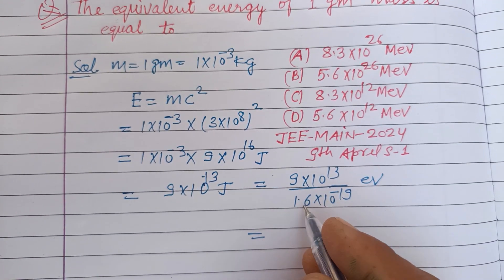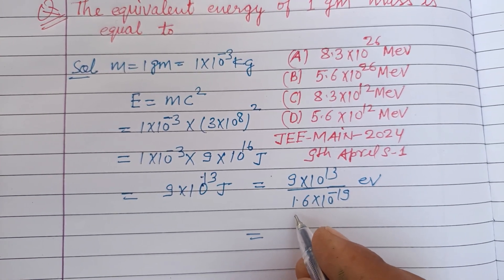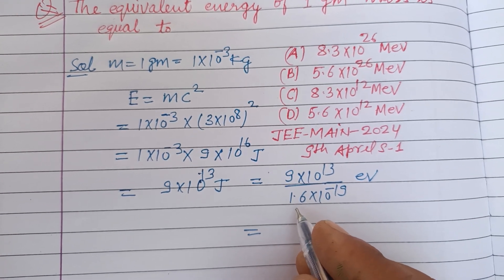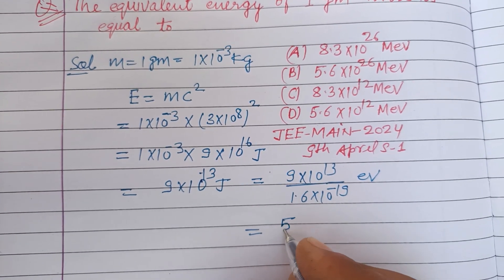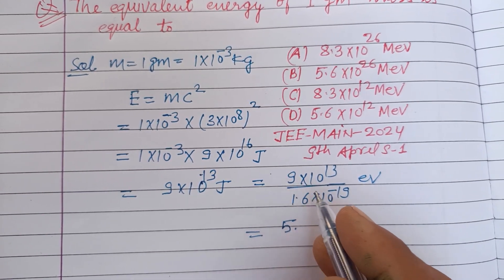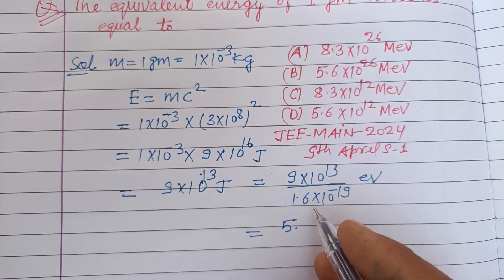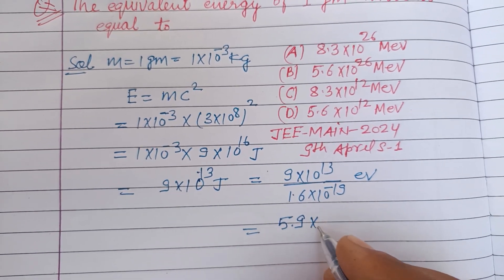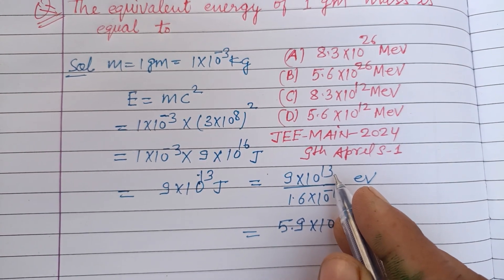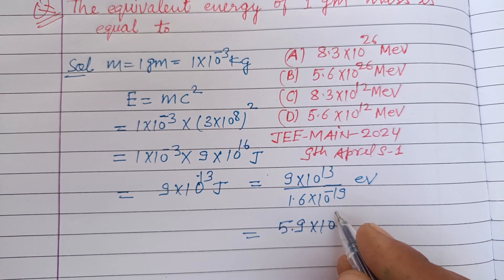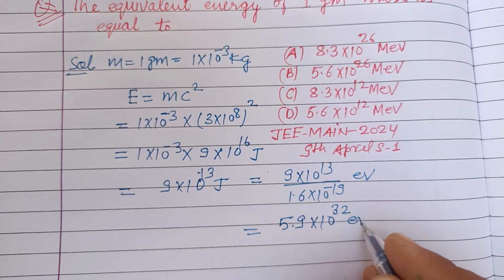So 16, 5, 80... now 10 remain, 1 remain, so 10, 16... 5.6 into 10 to the power 13 and 19, this is 32 electron volt.